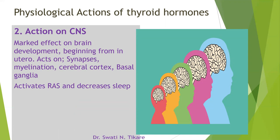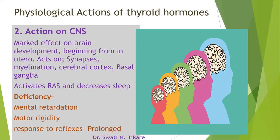Thyroid hormones act on the synapses required for myelination, the cerebral cortex, and the basal ganglia. They also activate the reticular activating system (RAS). When the RAS is active, it keeps the person awake and alert; inactivation causes sleep. So thyroid hormones promote the awake state. Deficiency results in mental retardation, motor rigidity, and prolonged reflex responses.